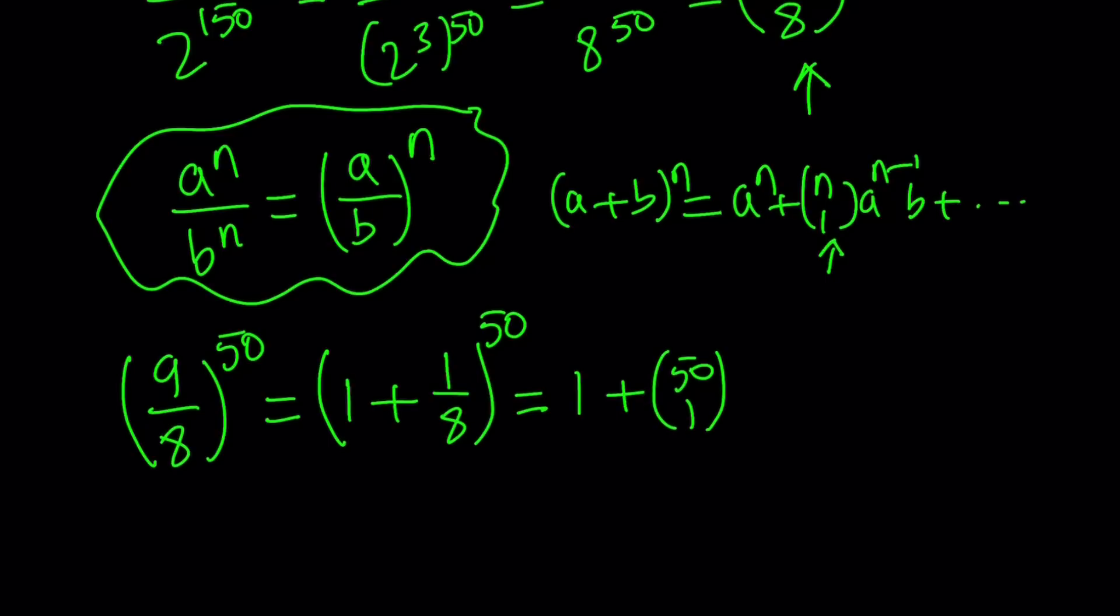So if you expand the first term, it's going to be 1 to the power 50, which is just 1. Okay, that's what's cool about having a 1 here instead of a 2 or a 3, because all powers of 1 will be 1. And then the next term is going to come from here, n choose 1, which is 50 choose 1.